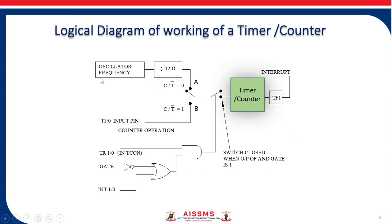If the oscillator frequency is 12 MHz, the timer will work at 12 MHz divided by 12, which gives 1 MHz. When the timer overflows — changing state from all ones to all zeros — a Timer Overflow Flag is set, and if interrupts are enabled it will generate an interrupt.